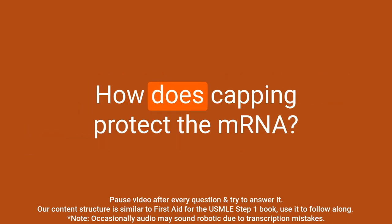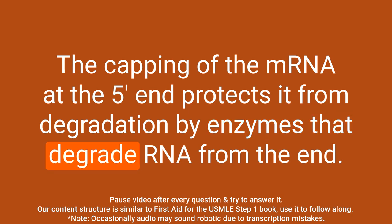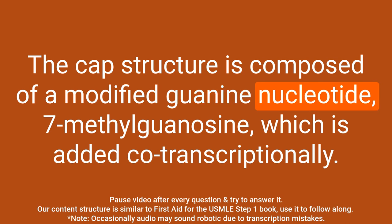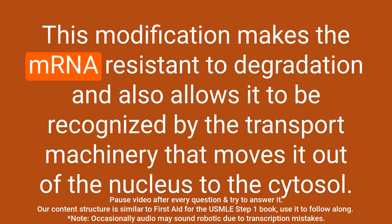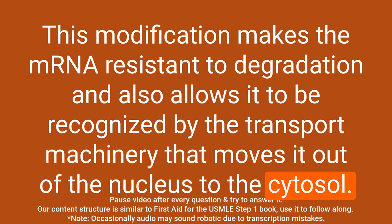Question: How does capping protect the mRNA? Answer: Capping of the mRNA at the 5' end protects it from degradation by enzymes that degrade RNA from the end. The cap structure is composed of a modified guanine nucleotide, 7-methylguanosine, which is added co-transcriptionally. This modification makes the mRNA resistant to degradation and also allows it to be recognized by the transport machinery that moves it out of the nucleus to the cytosol.